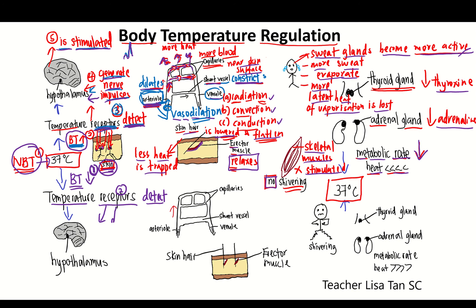The receptor generates the nerve impulse and sends the nerve impulse through the neuron to the hypothalamus. So once the nerve impulses reach the hypothalamus, the hypothalamus is stimulated. From the hypothalamus, nerve impulses are sent to the relevant parts of the body, such as skin, muscles, and glands.